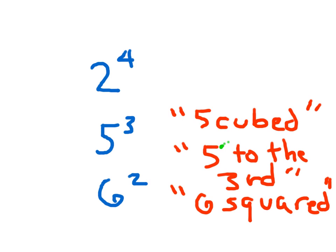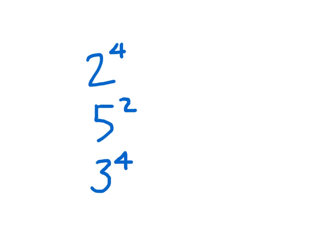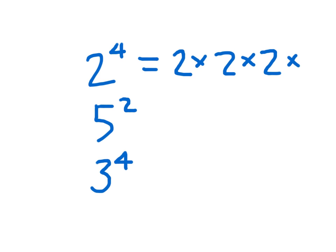So what does this really mean? Let's take a look. 2 to the 4th means we're going to multiply 2 together 4 times: 2 times 2 times 2 times 2. Please do not make that common mistake — students will want to just multiply the 2 with the 4. That is not what you do for exponents. When you say 2 to the 4th power, that's why there are four 2s there.